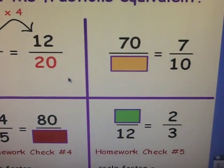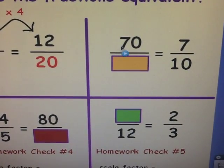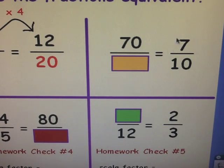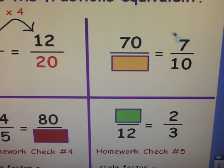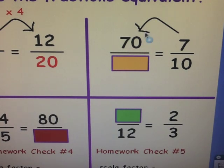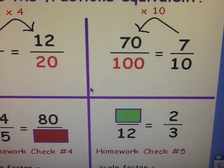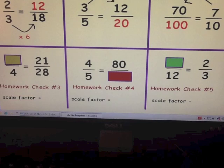One more example: seventy over some denominator is equivalent to seven-tenths — we want to find the missing denominator. We know both numerators. What can you multiply seven by to give seventy? That would be ten. Then do the same to the denominator: ten times ten is a hundred. So seventy over a hundred is equivalent to seven-tenths.